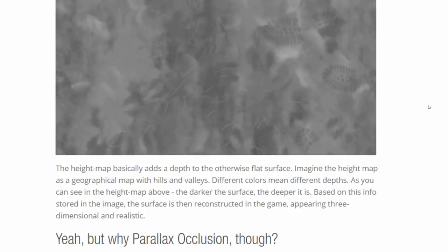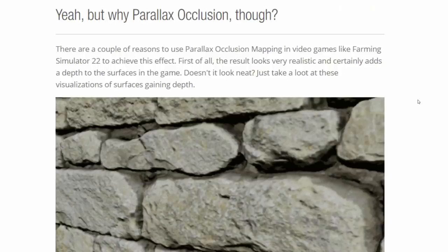So it's going to give you this sort of 3D effect. Based on this info stored in the image, the surface is then reconstructed in the game, appearing three-dimensional and realistic. But why parallax occlusion? There are a couple of reasons to use parallax occlusion mapping in video games like Farming Simulator 22 to achieve this effect. First of all, the result looks very realistic and certainly adds depth to the surfaces in the game.